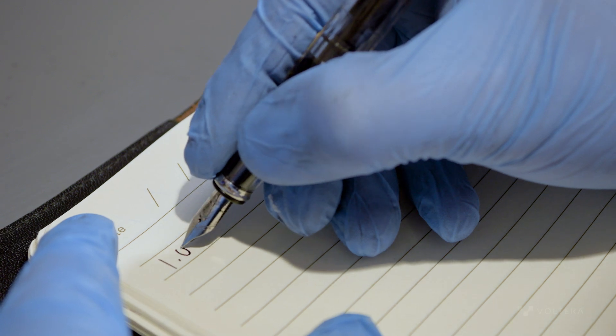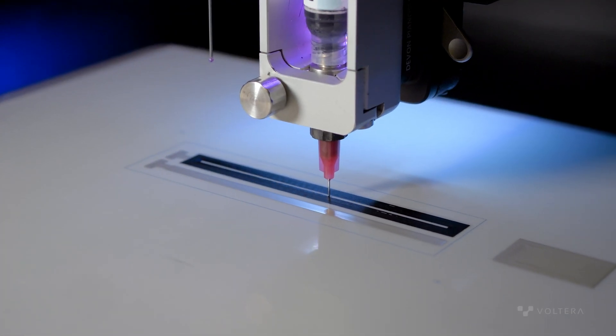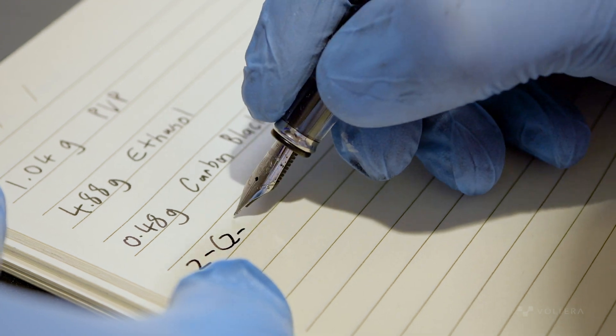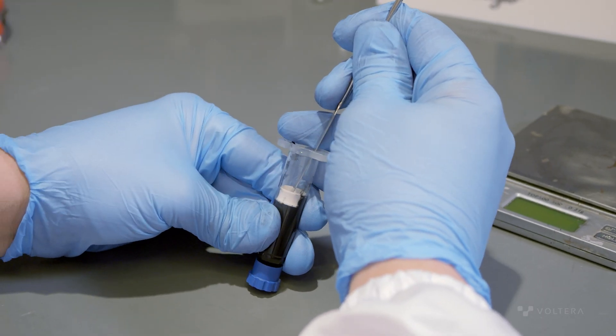Once we settled on which materials we were going to use, the next thing we needed to determine was the ratio of solvent, polymer and carbon for our ink. The process involved preparing a formulation, printing a test pattern on NOVA, tweaking the formula, and testing again, until we had a carbon ink with the desired performance and characteristics.